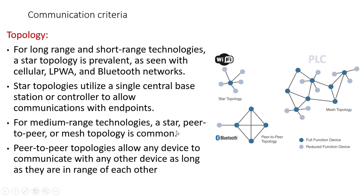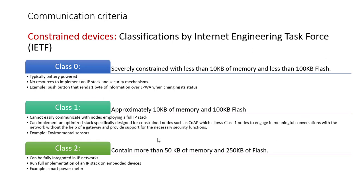Topology is another communication criterion. For long-range and short-range technologies, star topology is prevalent — as seen with cellular and LPWA networks. Star topology uses a single central base station or controller for communication with endpoints. For medium-range technologies, star, peer-to-peer, or mesh topologies are common. Bluetooth uses peer-to-peer topology, which allows any device to communicate with any other device within range.